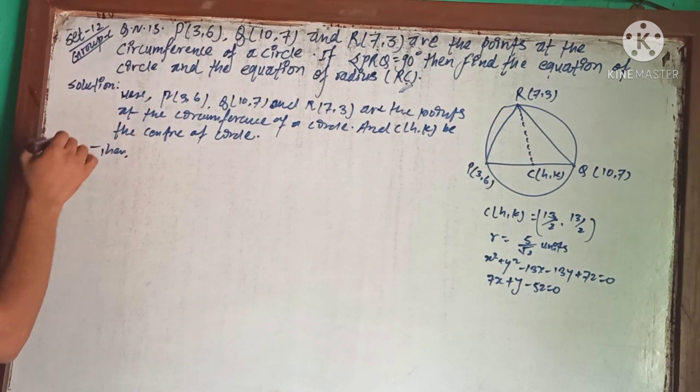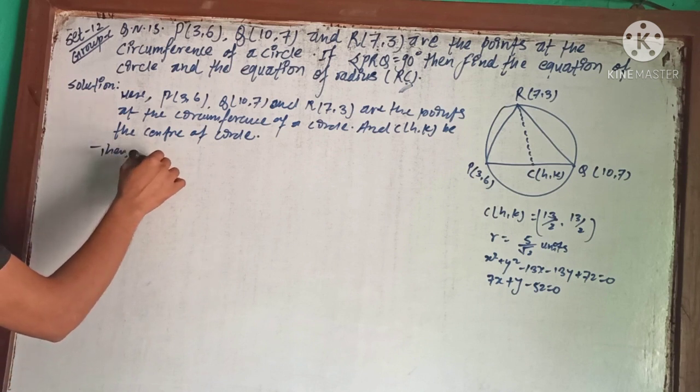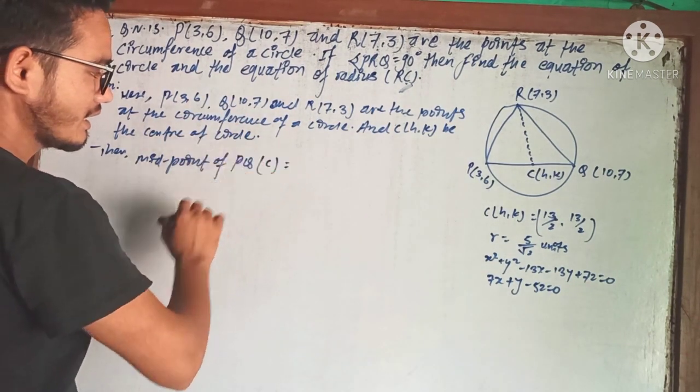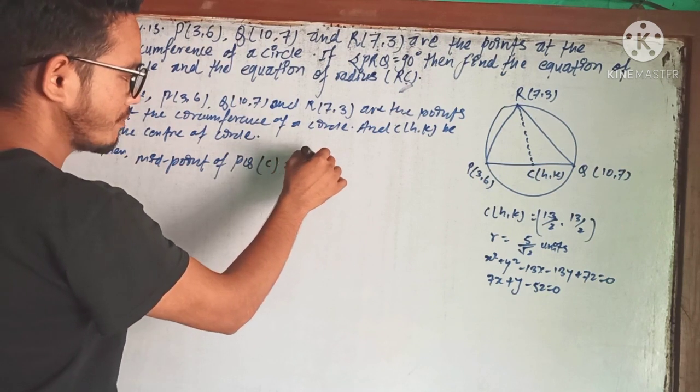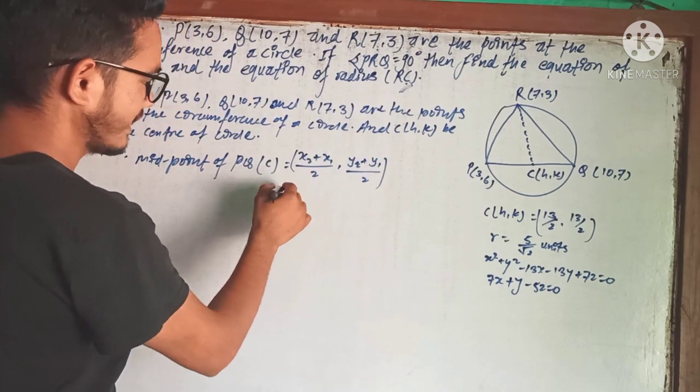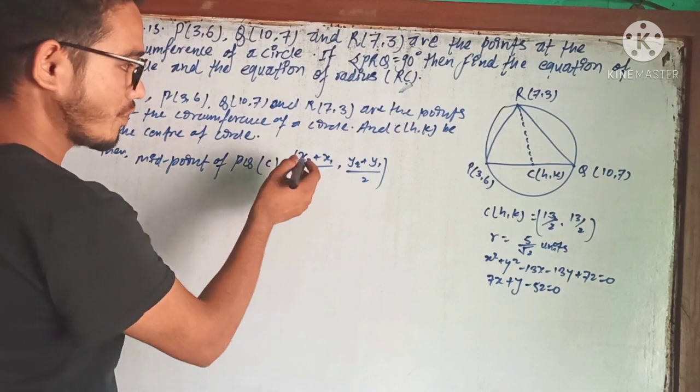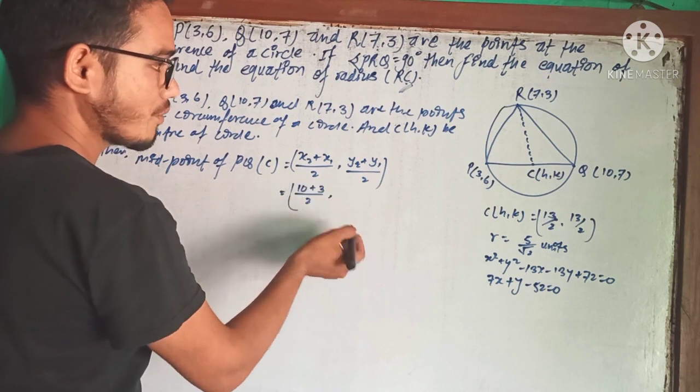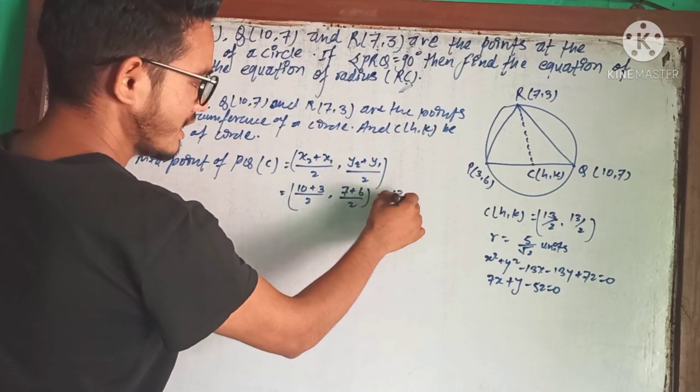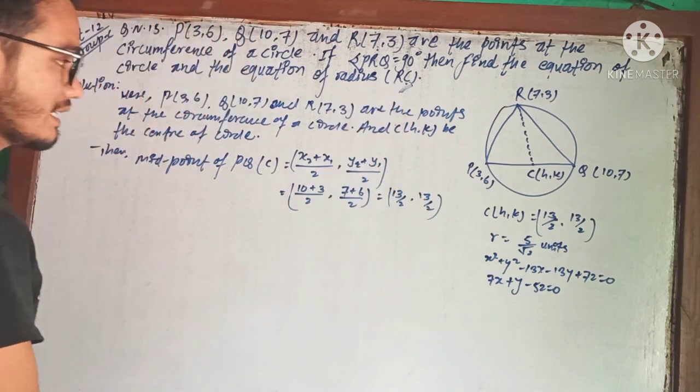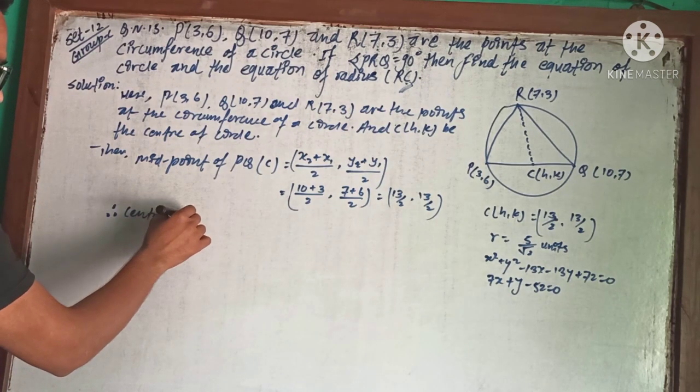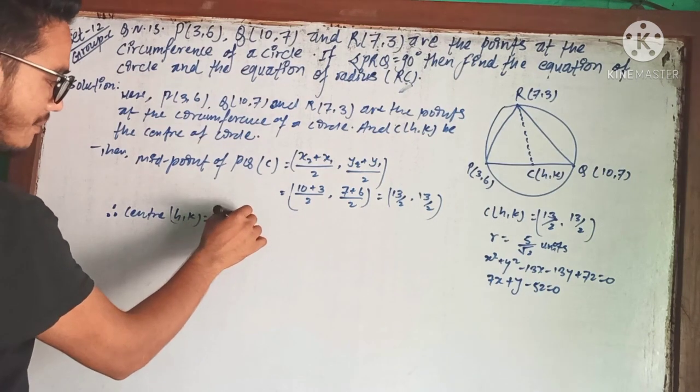The midpoint of PQ gives us the center. Using the midpoint formula (x2+x1)/2, (y2+y1)/2, we get (10+3)/2, (7+6)/2 equals 13/2, 13/2. Therefore, the center (h,k) is (13/2, 13/2).